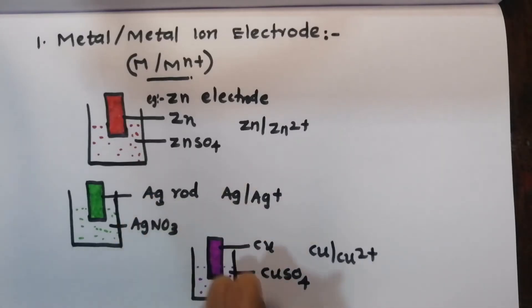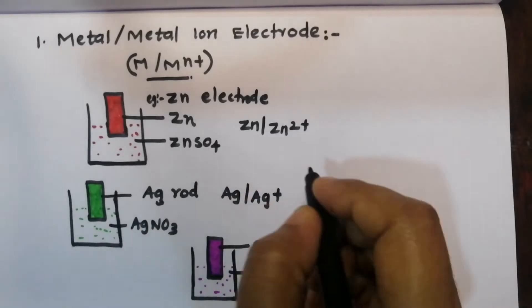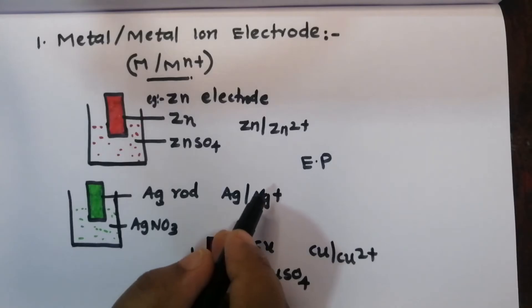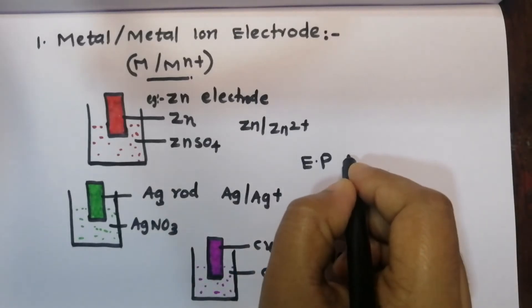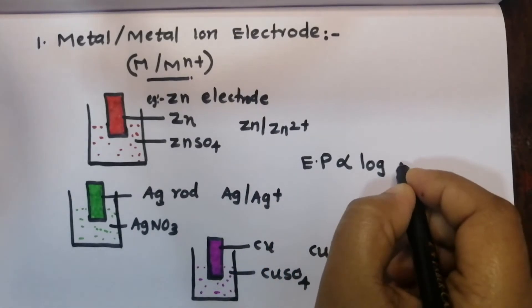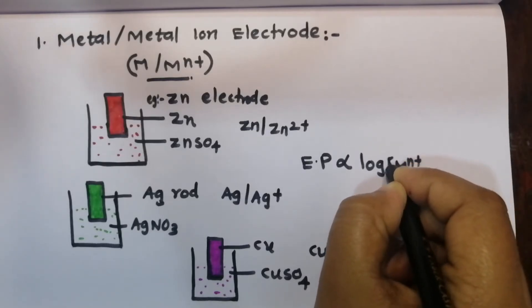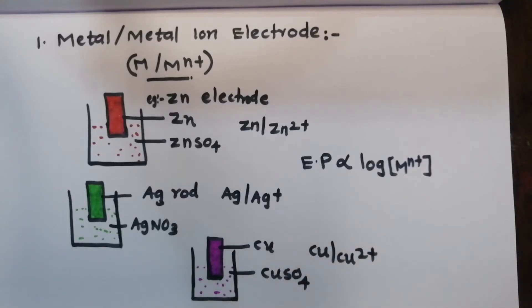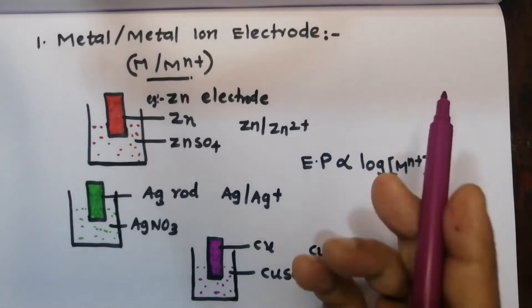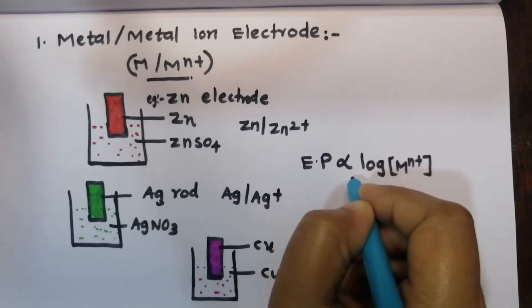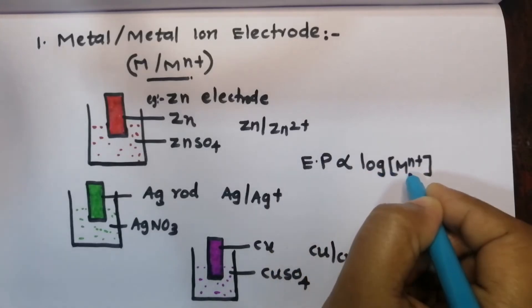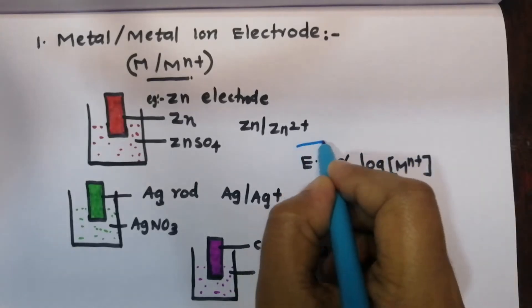Copper dipped in copper sulfate solution gives us Cu | Cu²⁺, forming a metal/metal-ion electrode. The key point here is that the electrode potential depends on the logarithm of the concentration of the metal ion, Mⁿ⁺. This relationship is how we understand the metal/metal-ion electrode.